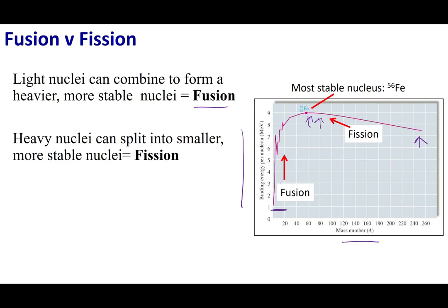These are the two processes: when we combine two lighter nuclei to make a more stable nucleus, this is called fusion. If we have a heavier nucleus, we can crack it and break it apart into smaller parts — that process is called fission. Let's talk about the fission process first.